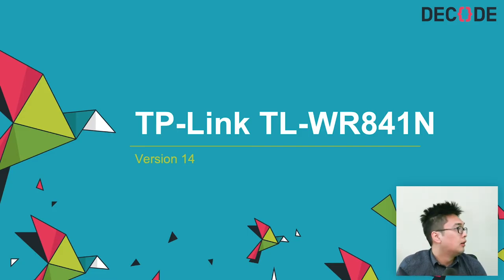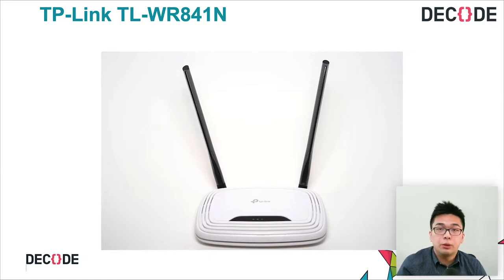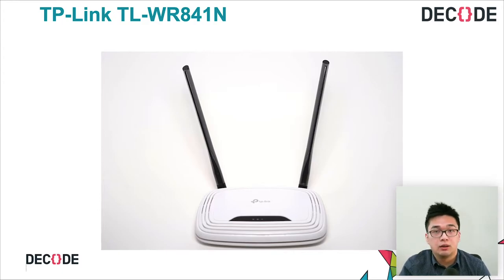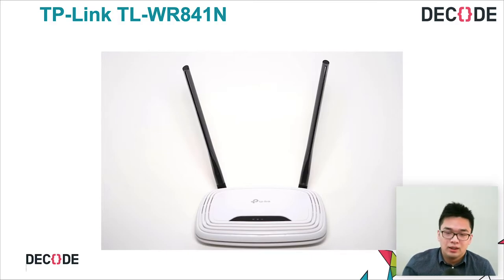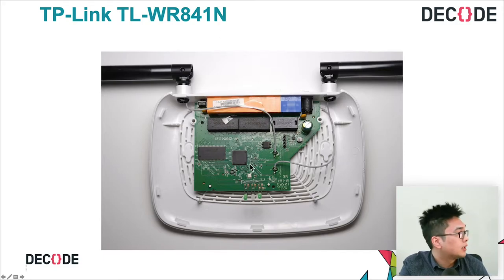This is our second target — the TP-Link router, also an N300 router. It is a much newer and very cheap device at only $20 US. If you want to get started in hardware vulnerability research, this is the router to start with — you won't necessarily cry over it if you break or destroy it. This is the internal view of the router: in the middle is a MediaTek SoC.